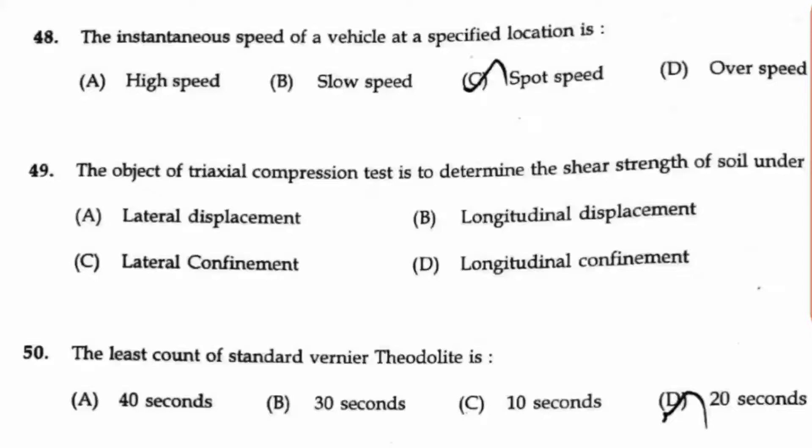Question number 48. The instantaneous speed of a vehicle at specified location is called as spot speed. Option C.